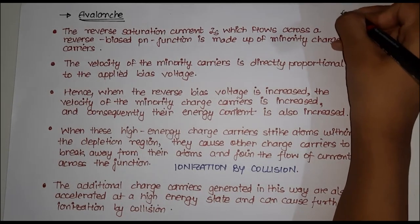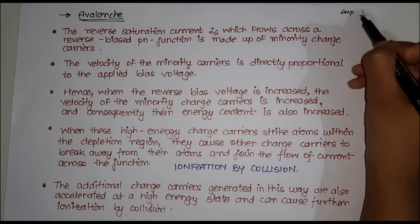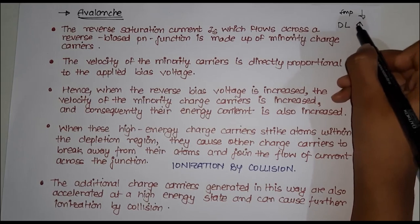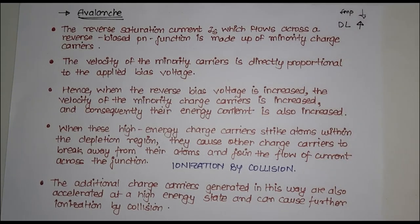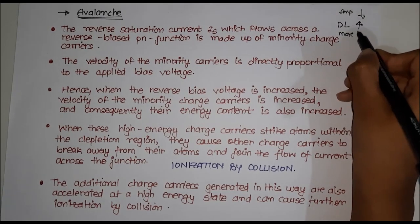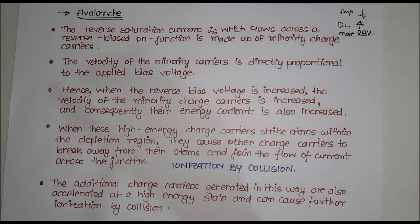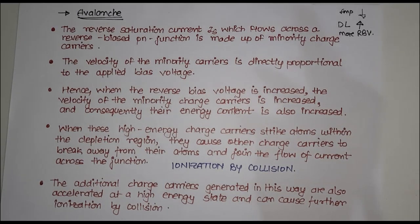Now for avalanche breakdown, the impurities present will be less. If the impurity is less, it means the depletion layer will be larger. If the depletion layer is very large, we'll require more reverse bias voltage to transfer the electrons. Initially if the depletion layer is small, less energy is needed for electrons to transfer; but if the depletion layer is larger, more reverse bias voltage is required.